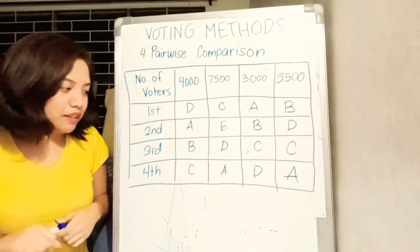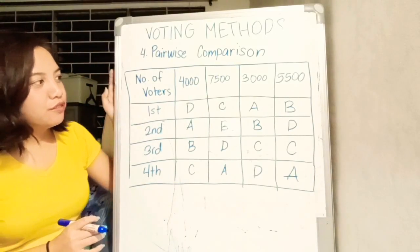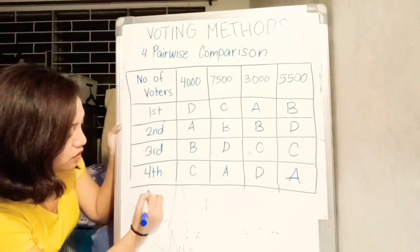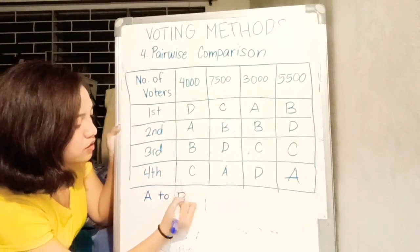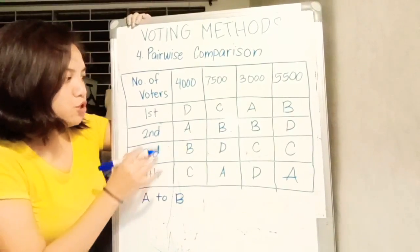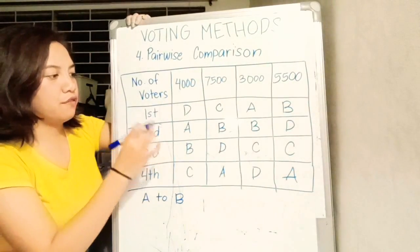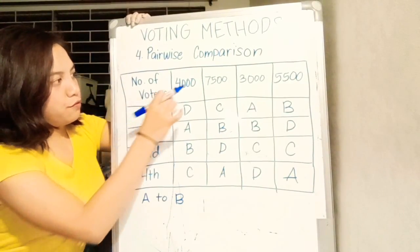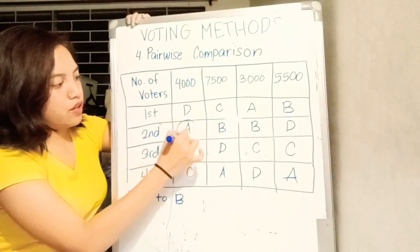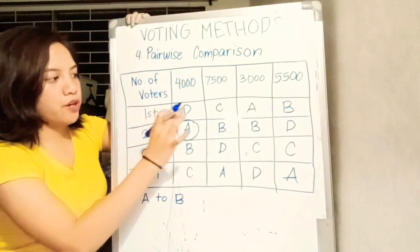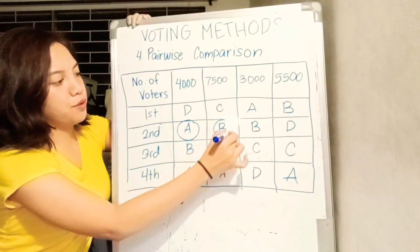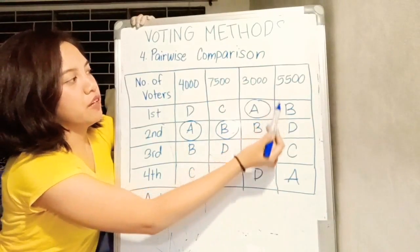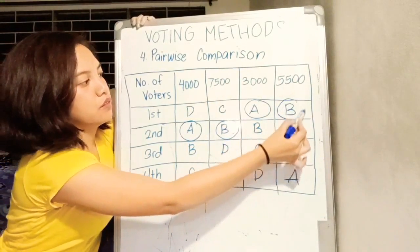Pag ginamit natin ang pairwise comparison, for example, we compare A and B. All you have to do is check the comparison of first choice between letter A and B. For 4,000, they prefer A. For 7,500, they prefer B. For 3,000, they prefer A. And for 5,500, they prefer B.